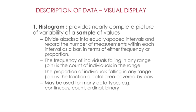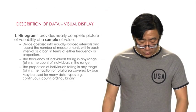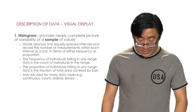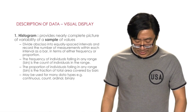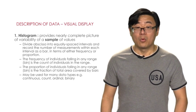For frequency histograms, the frequency of individuals falling in any range — what we call the bin — is the count of individuals in that range. In terms of proportion, the proportion of individuals falling in any bin is the fraction of total area covered by bars. Histograms may be used for many data types including continuous, count, ordinal, or binary data.